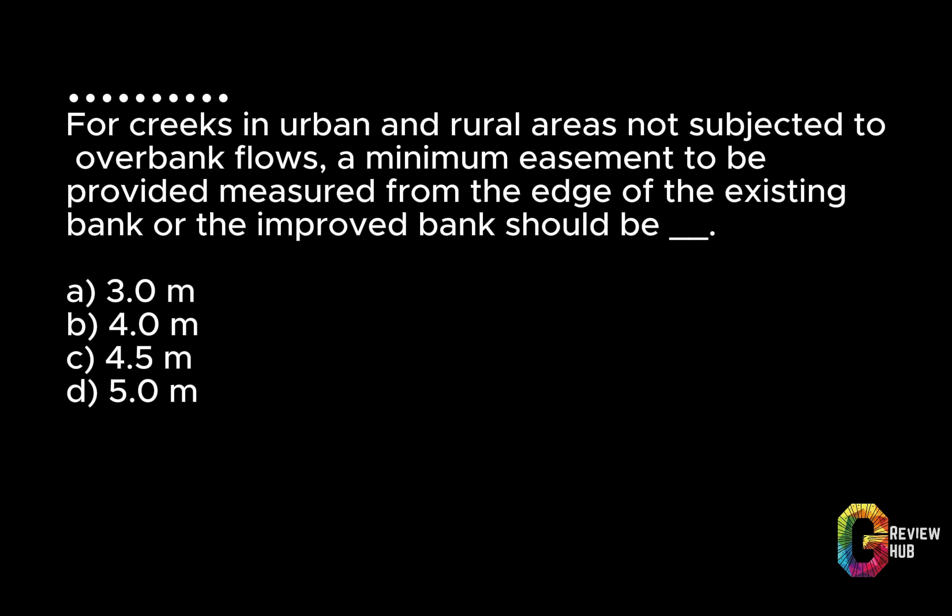For creeks in urban and rural areas not subjected to overbank flows, a minimum easement to be provided measured from the edge of the existing bank or the improved bank should be: A. 3.0 m. B. 4.0 m. C. 4.5 m. D. 5.0 m. Answer: C. 4.5 m.